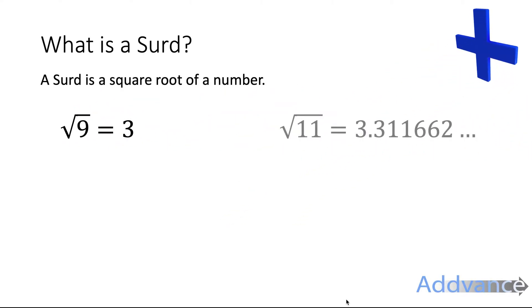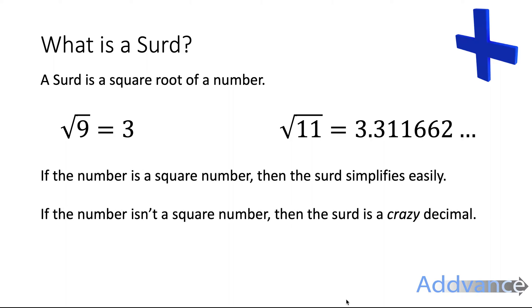What is a surd? A surd is the square root of a number. For example, the square root of 9 is 3, but the square root of 11 is 3.311662... It continues forever. It's a weird decimal.